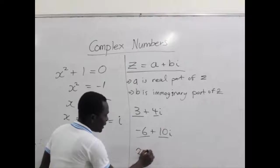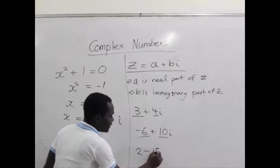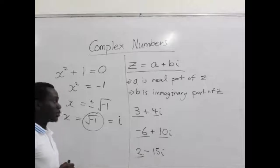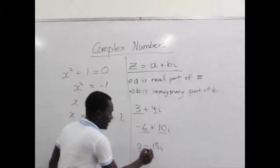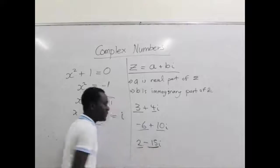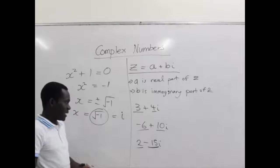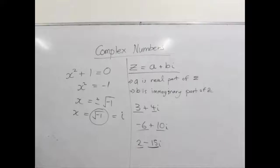2 - 15i. The 2 is the real part of the complex number and the negative 15 becomes the imaginary part of that complex number. So now we are confident with complex numbers, at least for starters or beginners.